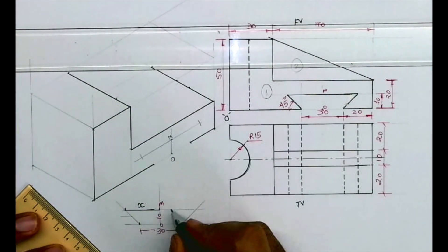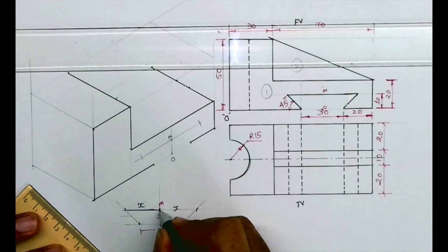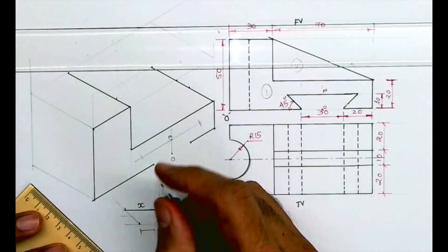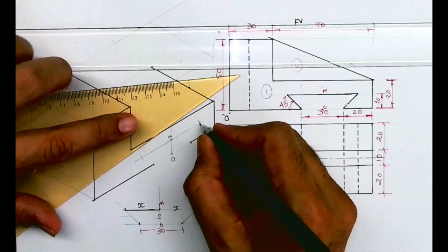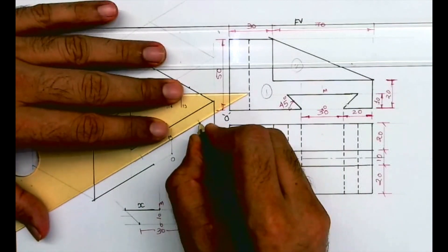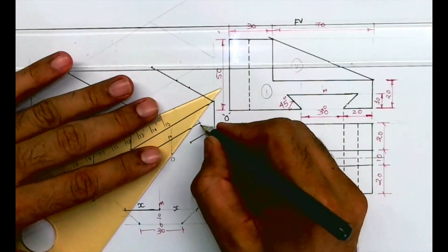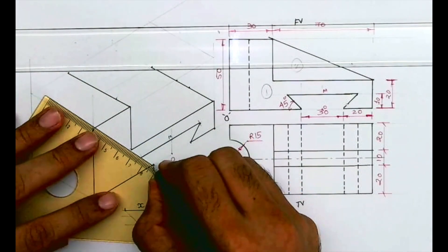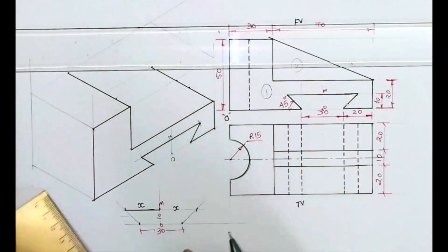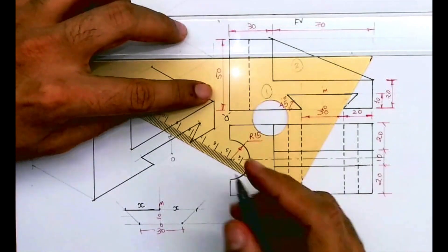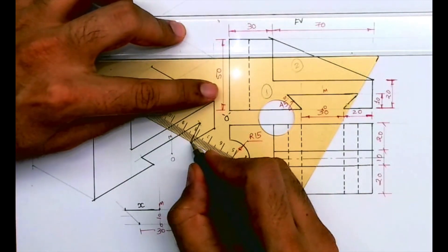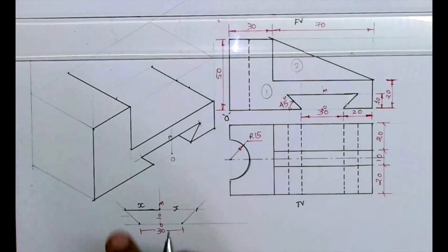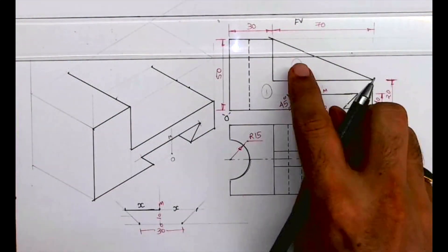Because both sides we have distance X, so what I am doing is transferring XX on both sides. This way you will get the slot part, and this line is going inside because it is dotted - it's through and through. So we are done with part one.